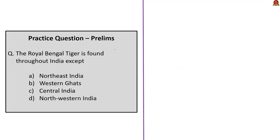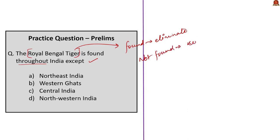The next question states the Royal Bengal tiger is found throughout India except which region. The correct answer is North Western India, where the Royal Bengal tiger is not found. There are eight races of the tiger species Panthera tigris, and the Indian race is the Royal Bengal tiger, found throughout India except the North Western region.